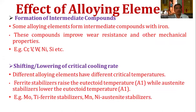The next effect is the formation of intermediate compounds. Some alloying elements form intermediate compounds with iron. These compounds improve the wear resistance and other mechanical properties. Elements such as chromium, vanadium, tungsten, nickel, and silicon are added for this effect, forming intermediate compounds that improve mechanical properties and wear resistance.